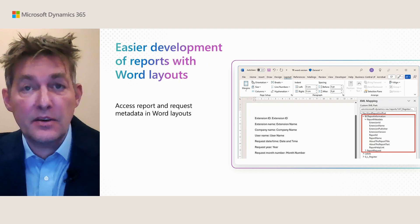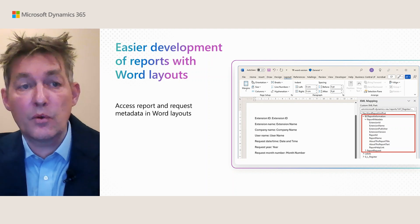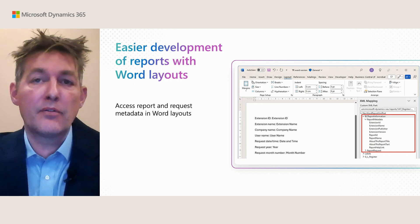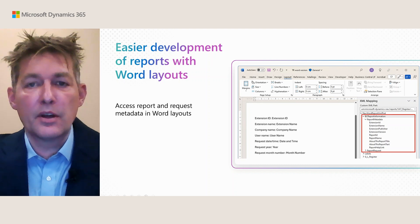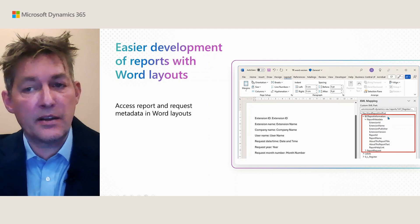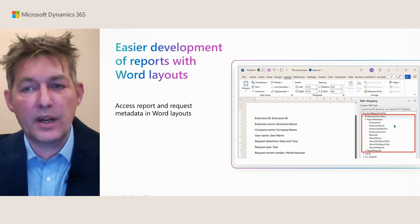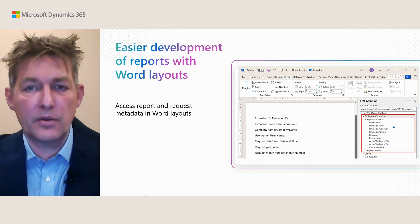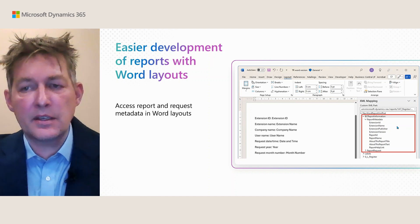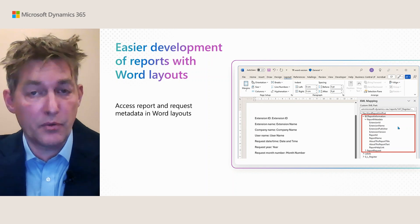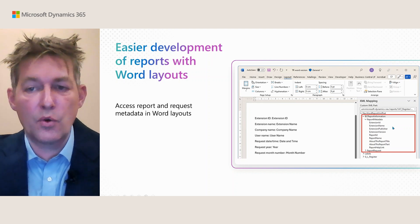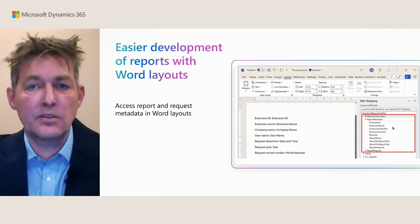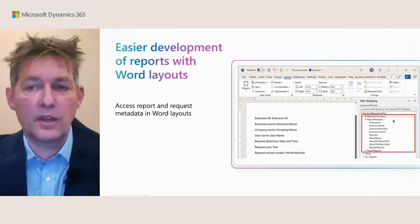We also made it a lot easier to work with reports that involve Word layouts, both for new reports and for existing reports where you want to add a Word layout. Similarly to the Excel layout feature, you can now find standard information about the report metadata and the request directly in the XML file for the Word report layout. This makes it much easier because you don't have to code this in AL, and it also standardizes the way you show report name, company name, and other things.